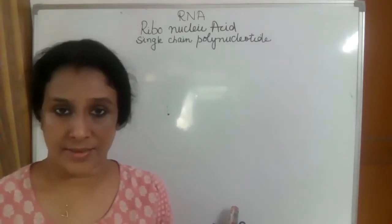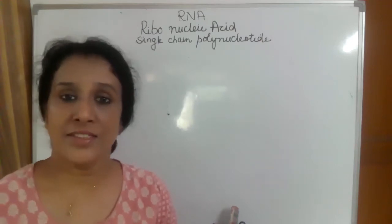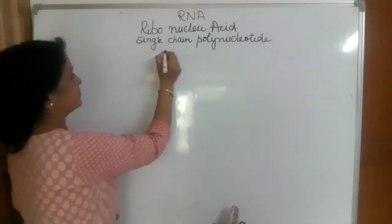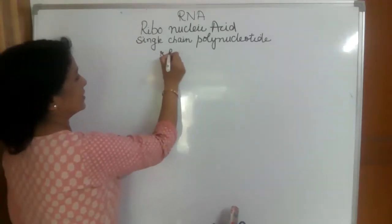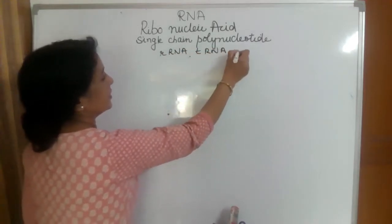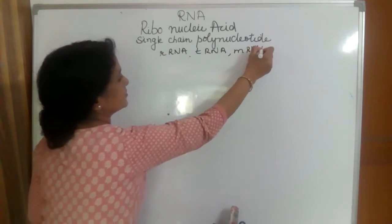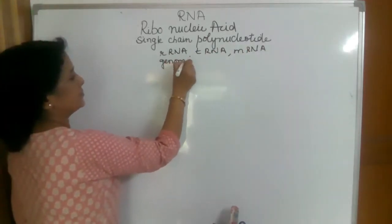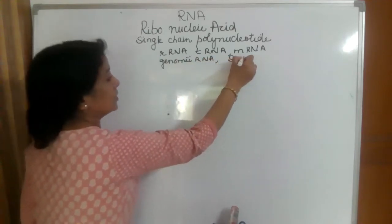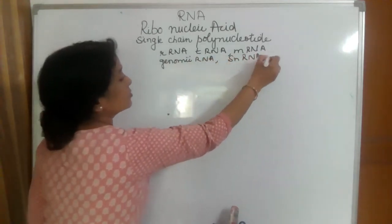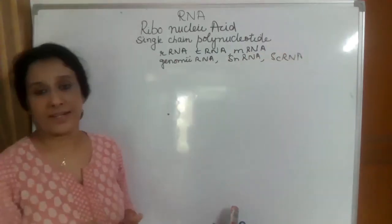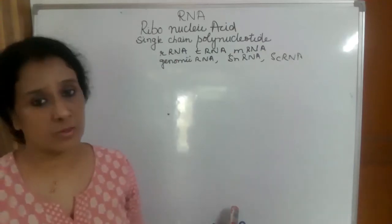All RNAs are single-chain. There are different types of RNAs: rRNA, tRNA, mRNA, genomic RNA, small nuclear RNA, and small cytoplasmic RNA. There are many different types of RNAs, but all types are formed in the nucleus.